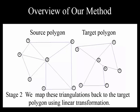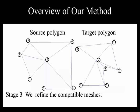In the second stage, we map these triangulations of sub-polygons from the source polygon onto the corresponding ones of the target polygon using linear transformation, generating the compatible meshes. Lastly, we refine the compatible meshes by operations such as flipping interior edges, segmenting large area, and remeshing.